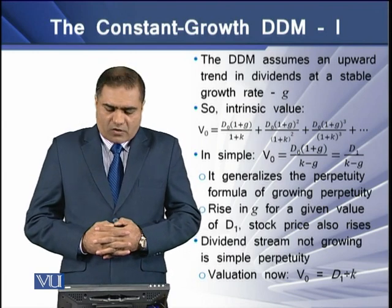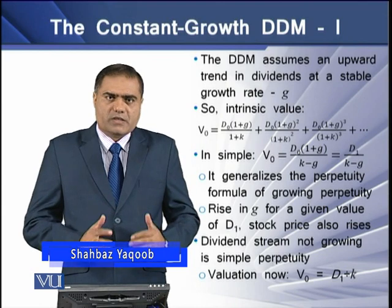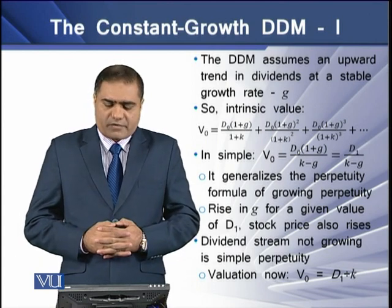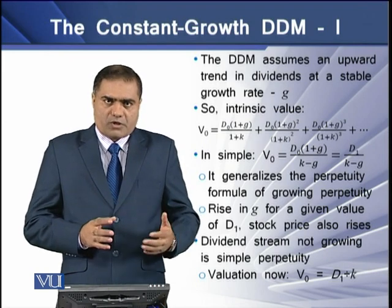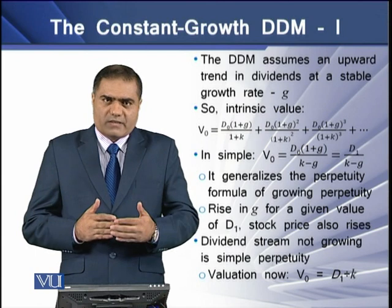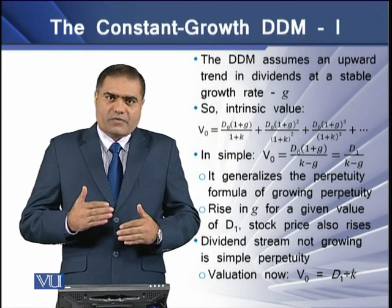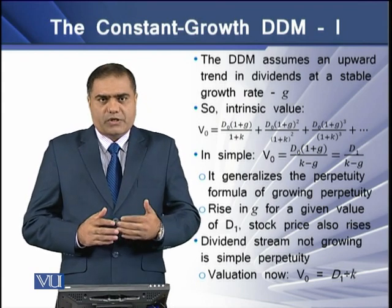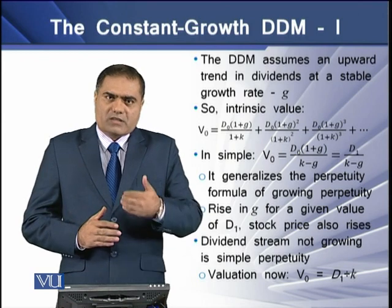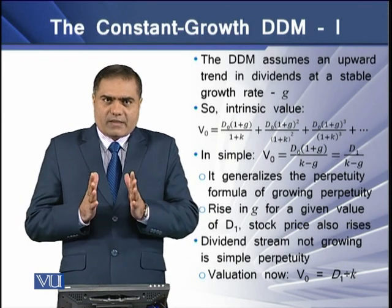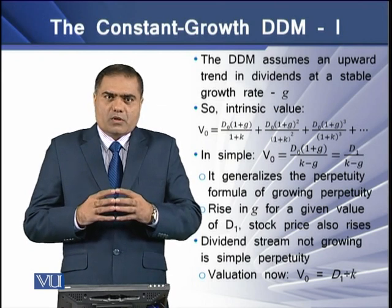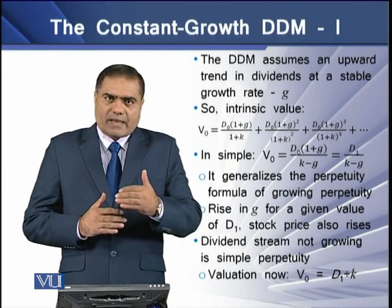The first assumption is that the dividend discount model assumes an upward trend in dividend at a stable growth rate, and that growth rate is termed G. This means that the intrinsic value V0 of a stock is equal to the present value of dividends grown at a specific growth rate. For each year, we need to grow the dividend at this stable growth rate, so V0 equals the grown dividend at the capitalized rate.